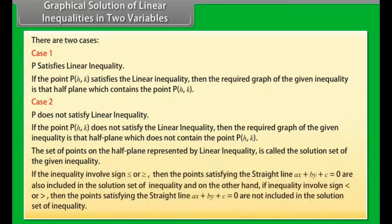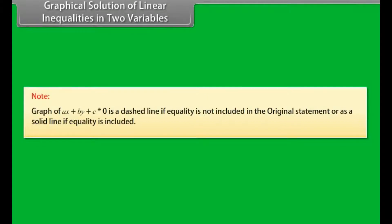The set of points on the half plane represented by the linear inequality is called the solution set. If the inequality involves ≤ or ≥, then the points satisfying the straight line Ax plus By plus C = 0 are also included in the solution set. If the inequality involves < or >, then the points on the straight line are not included. Note: the graph of Ax plus By plus C = 0 is a dashed line if equality is not included, or a solid line if equality is included.